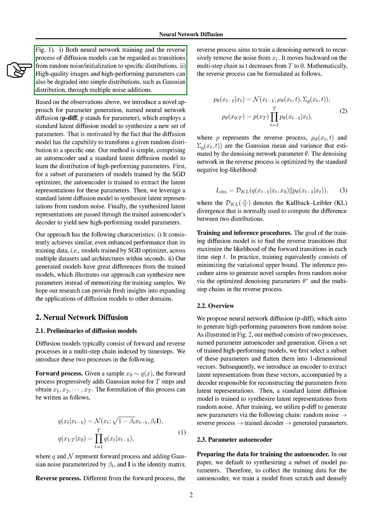Moreover, both high-quality images and high-performing parameters can be broken down into simpler distributions, like the Gaussian distribution, through the addition of noise.